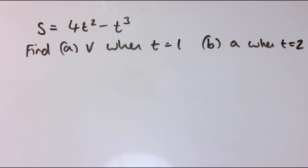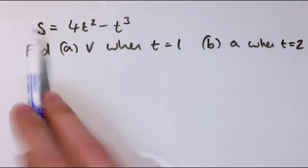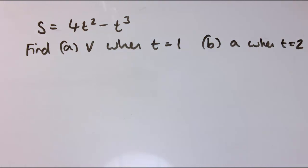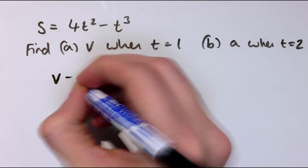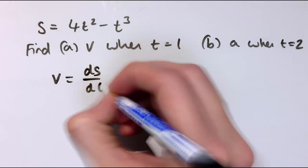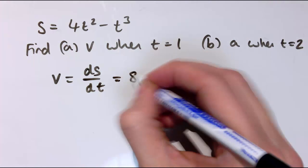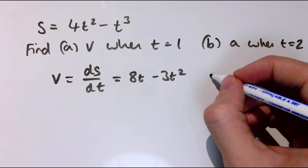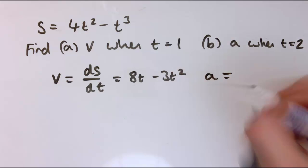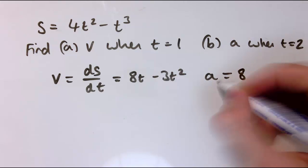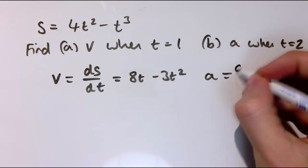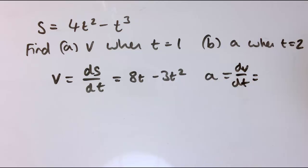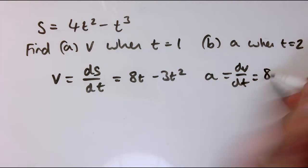So here's another example. I've got the displacement given by this formula, S equals 4t squared minus t cubed. I want to find the velocity when t equals 1 and the acceleration when t equals 2. So the velocity is ds by dt. That's 8t minus 3t squared. And I may as well work out the acceleration whilst I'm here. I differentiate it to get again. So acceleration is dv by dt, and that gives me 8 minus 6t.